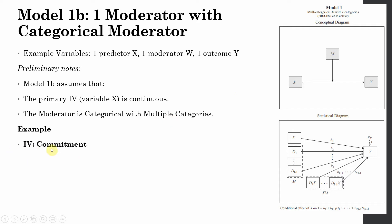My IV is Commitment, my moderating variable is Bank Size — that is Small, Medium and Large sized banks — and my Dependent variable is Organizational Performance. I would like to know whether the impact of commitment on organizational performance is moderated by the size of the bank.